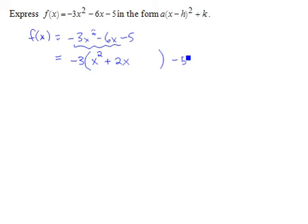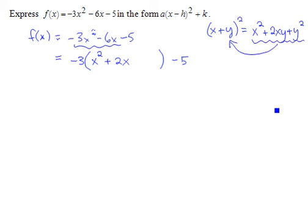Now, my next step is to complete the square of what's in the parentheses. So a perfect square trinomial is one that has the form x plus y squared, which is x squared plus 2xy plus y squared. So we're trying to work with something of this form so that it can be factored back as a perfect square.